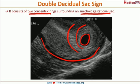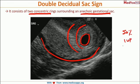Double decidual sac sign is a very useful feature for diagnosis of early pregnancy on ultrasound. It is useful to diagnose early intrauterine pregnancy even when the yolk sac or embryo is still not visualized. Almost 50% of intrauterine pregnancies will show this double decidual sac sign.